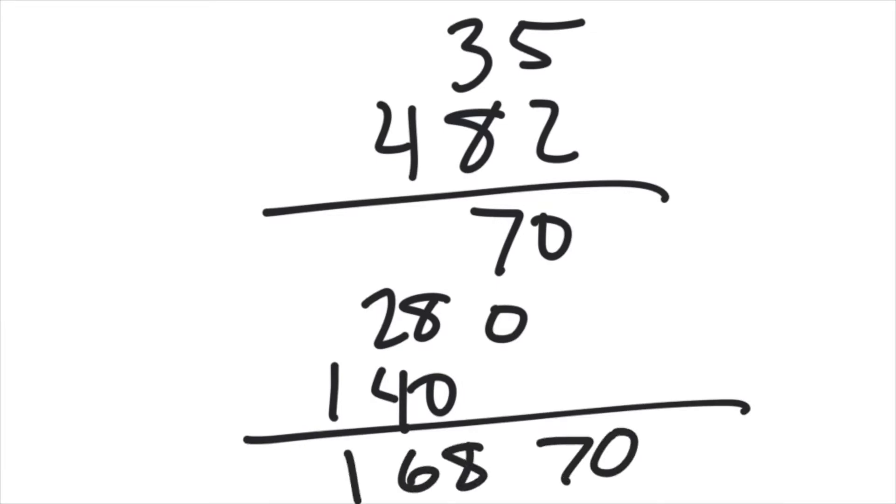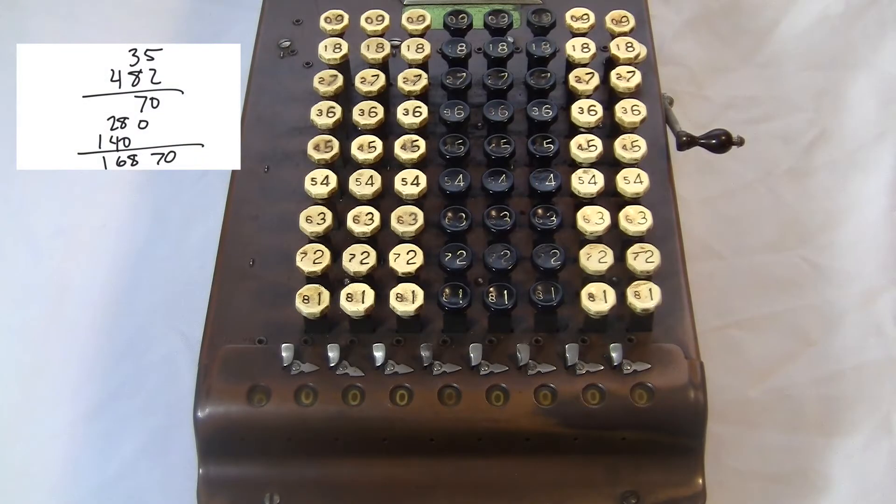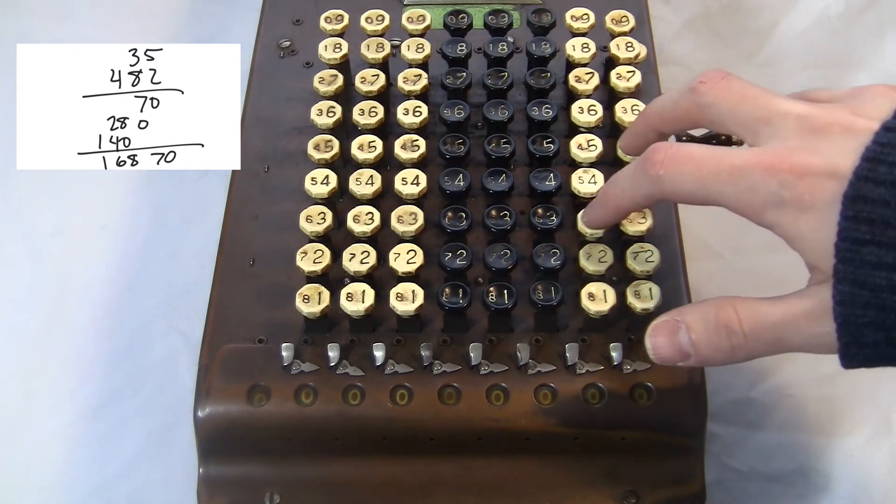So on the machine, I'm going to do each of those three products. First, 35 times 2. Then move over one digit and do 35 times 8. Then move over another digit and do 35 times 4.